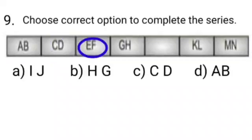And in fourth box GH is written, and in fifth box nothing is written. In sixth box KL is written, and in seventh box MN is written. Now let's see which option will come in empty box.